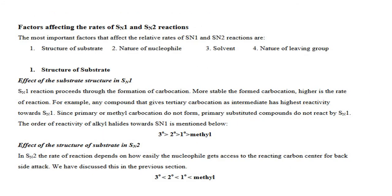Now, factors affecting the rate of SN1 and SN2 reactions. The first factor is the structure of the substrate, second is the nature of the nucleophile, third is the solvent, and fourth is the nature of the leaving group. Regarding structure of the substrate: in SN1 reaction, tertiary alkyl halide is most stable, then secondary, then primary, then methyl. In SN2 reaction, methyl halide is most stable, then primary, then secondary, then tertiary.